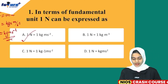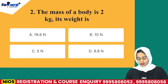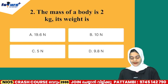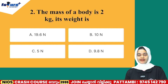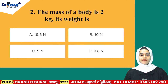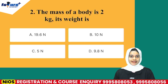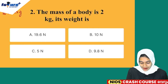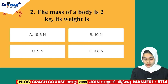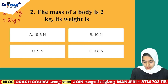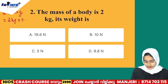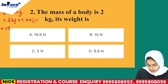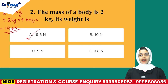Second question: a 2 kg mass — its weight options are: Option A 19.6 N, Option B 10 N, Option C 5 N, Option D 9.8 N. Weight equals mass times acceleration due to gravity. W = mg = 2 × 9.8 = 19.6 N. The correct answer is Option A.